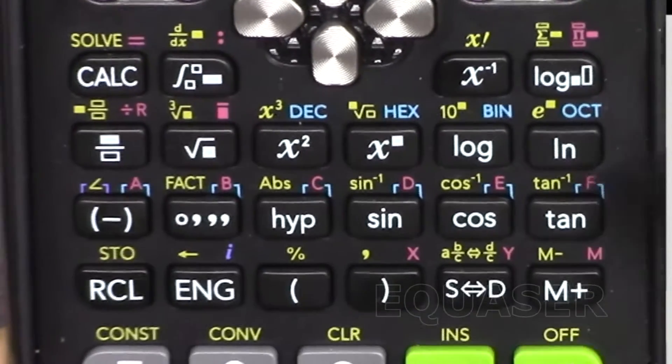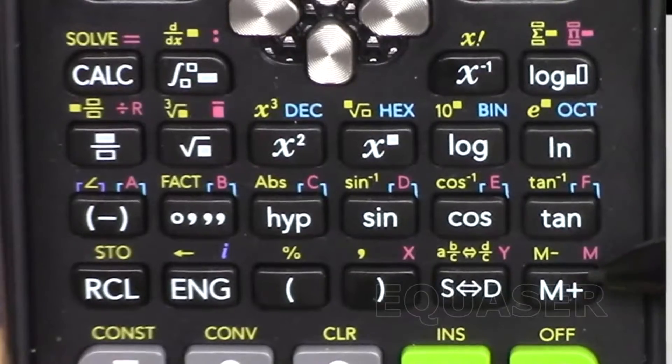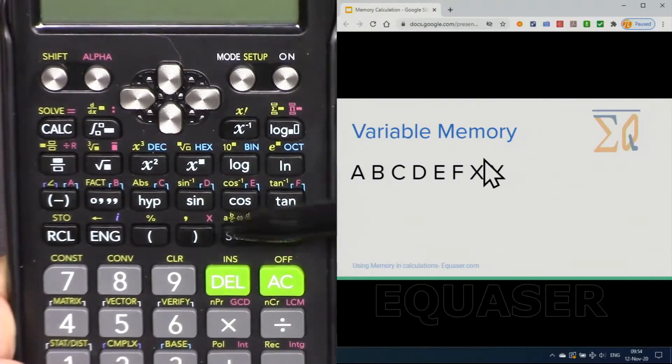ABCDEFXY, these are variable memory and we have one independent memory called M and it is different. I'm gonna first give you example on this and then about this one.